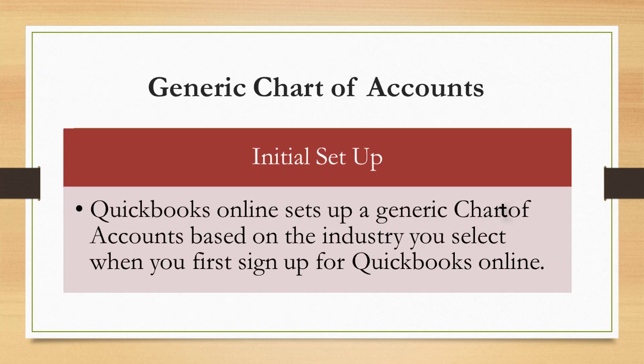When you initially purchase a QuickBooks Online account, QuickBooks sets up a generic chart of accounts based on the industry you select when you first sign up. If you select the construction industry, they'll include generic accounts related to that industry. If you choose hair salons or the beauty business, they'll include accounts specific to the beauty industry — though some may be very generic depending on what QuickBooks Online has available.